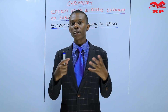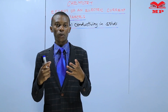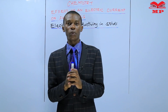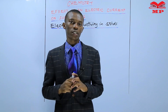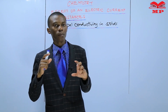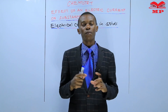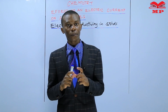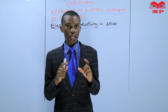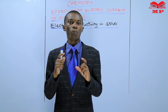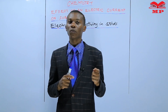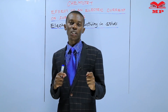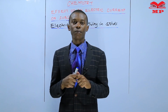In our previous lesson, we discussed and defined three important terms. The first one was electric current — electric current is the flow of electrons, and electrons flow from the negative terminal to the positive terminal. The second term was a conductor — a conductor is a substance that allows electric current to pass through it. Examples of conductors include metals like aluminium, zinc, copper, and sodium. All those are metals and they are conductors of electricity.